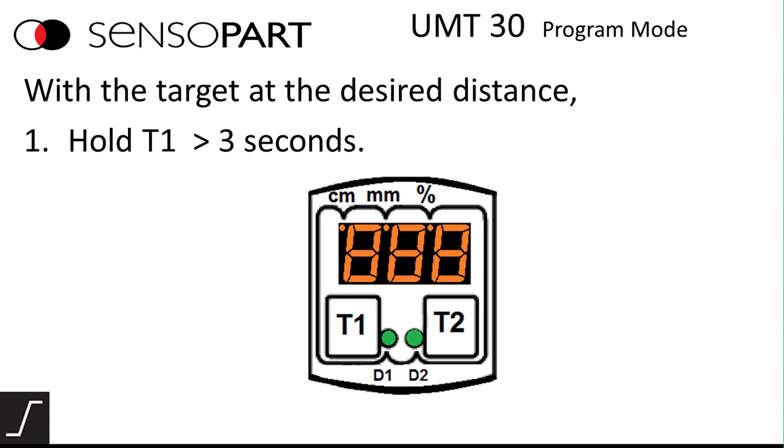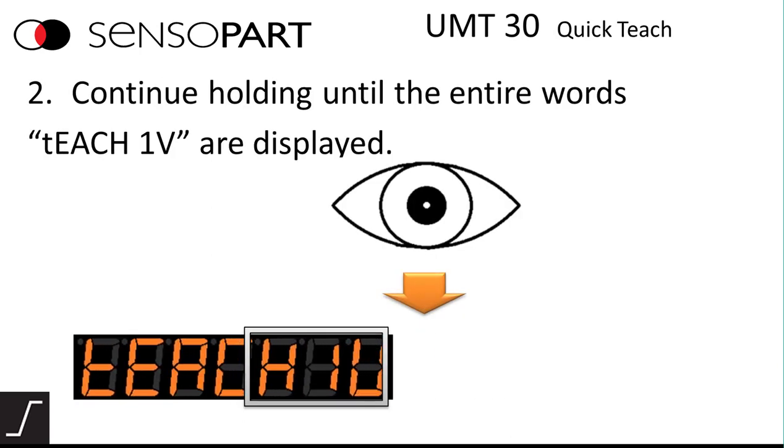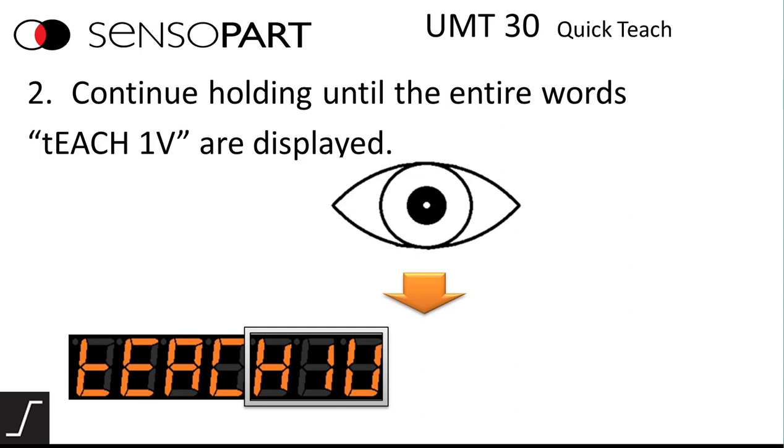To do this you put the target at the first distance and hold the T1 button for more than three seconds. And you'll see the display will say teach one U, which is like teach one volt.